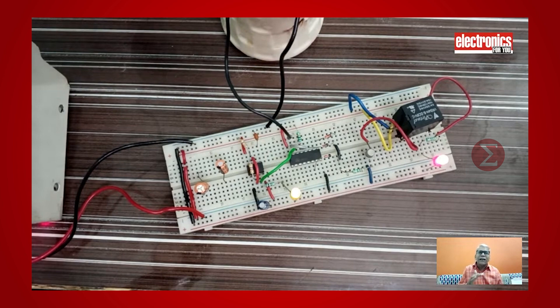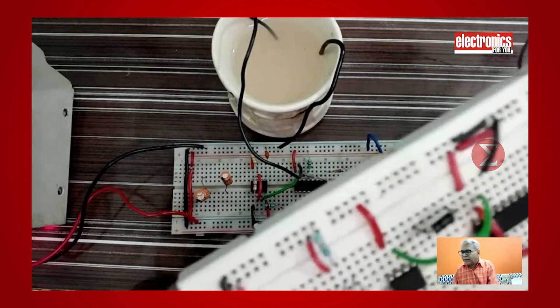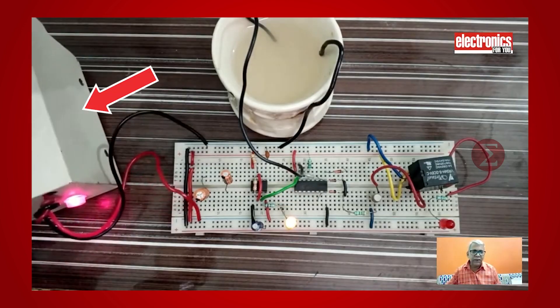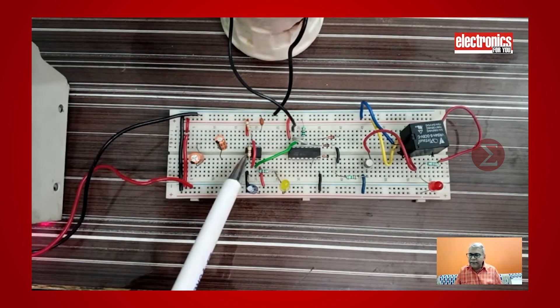This is our assembled circuit on a breadboard. We have taken common positives and negatives from here. We have given the power supply to this breadboard from here. This is 555 IC.